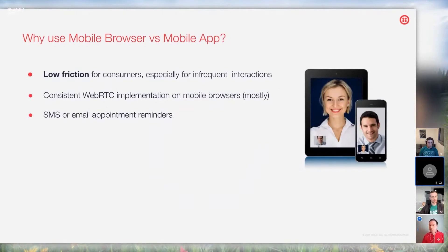Why use mobile browser versus mobile app? With a mobile app, it's going to be more performant. You get to decide which WebRTC version to use, you can patch it, and you can add support for extra hardware codecs. But the real reason to use mobile browsers is it's a low-friction way for consumers to get onto video chat, especially for infrequent interaction. You'd be surprised the number of people that have trouble installing mobile applications. With a mobile browser, it's one click and you're in video chat. The WebRTC implementation of mobile browsers has become very consistent — you can rely on it mostly. Another interesting trend is the use of appointment reminders by businesses via SMS or email. If you have a link to the video chat application in that, it's really simple for people just to click and go.